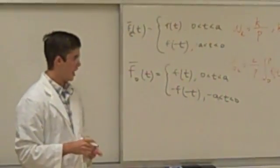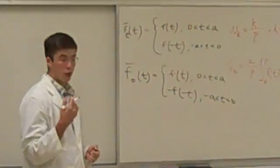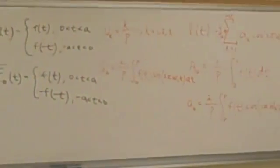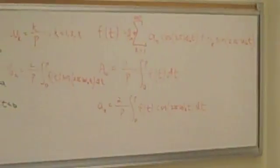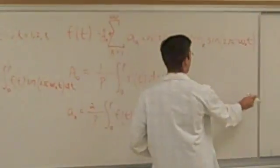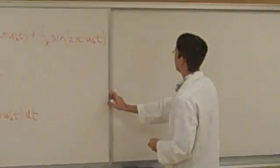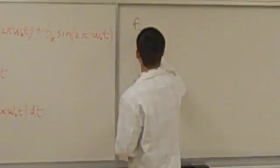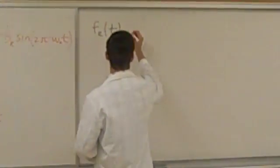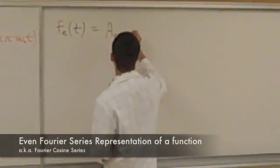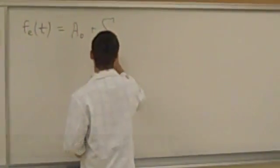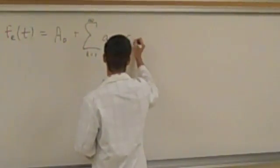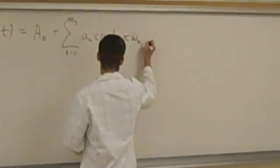So, how is this related to our ideas of a Fourier series representation? Well, if we're dealing with even or odd functions, we can actually represent our trigonometric Fourier series as a much simpler version. Namely, we can write the even Fourier series representation, which would look like a naught plus the summation from k equals 1 to infinity of a sub k cosine of 2 pi omega sub k t.